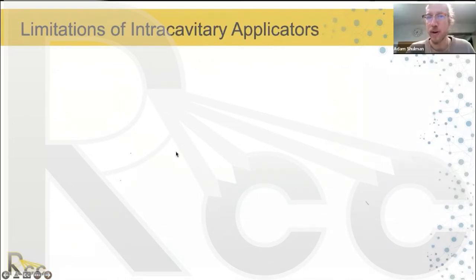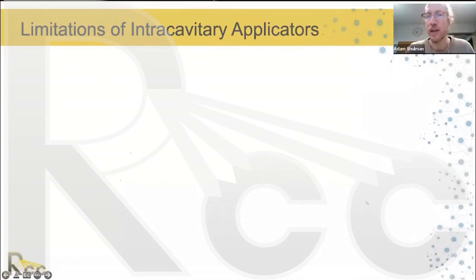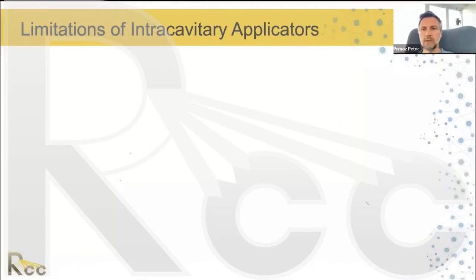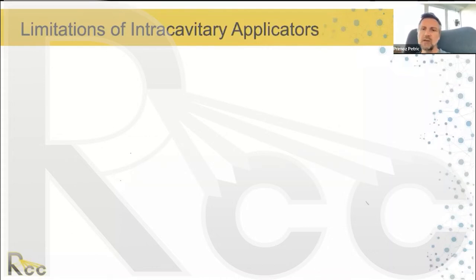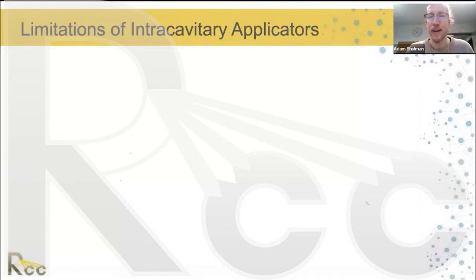A participant asked how to define Point A when there is a retroverted uterus. You define it exactly the same way — always according to the applicator, not the anatomy. If the uterus is retroverted and the tandem points posteriorly, the Point A positions will simply be located a little bit posteriorly. Always follow the rule blindly: two centimeters from the top of the ring, two centimeters to the lateral tandem. For a patient with subtotal hysterectomy and cervical cancer, you also define it according to the applicator — two centimeters from your vaginal part, two centimeters lateral.